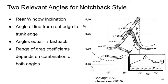For a notch back or sedan style, there are basically two relevant angles to consider. One is the rear window inclination angle, and the other is the angle of the line from the roof edge to the trunk edge. If those angles are equal, it's a fastback by definition; if not, it's a notchback. The range of drag coefficient obtained depends on combinations of the two angles. On the horizontal axis is the angle from the roof edge to the trunk edge, and the different curves represent different rear window angles versus drag coefficient — trends can vary widely depending on the combination used.